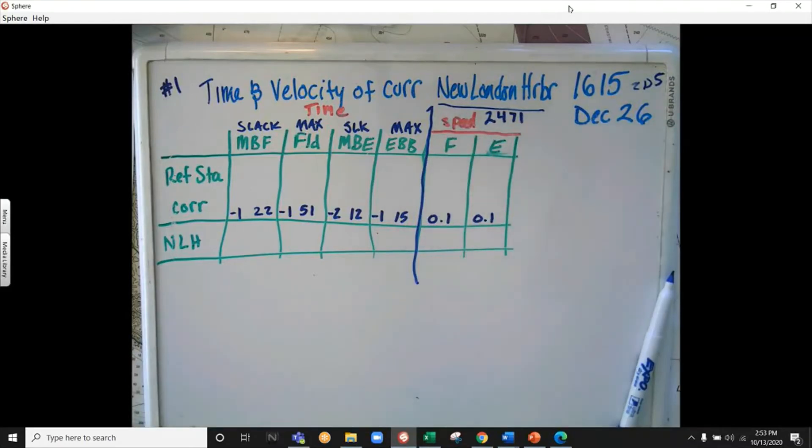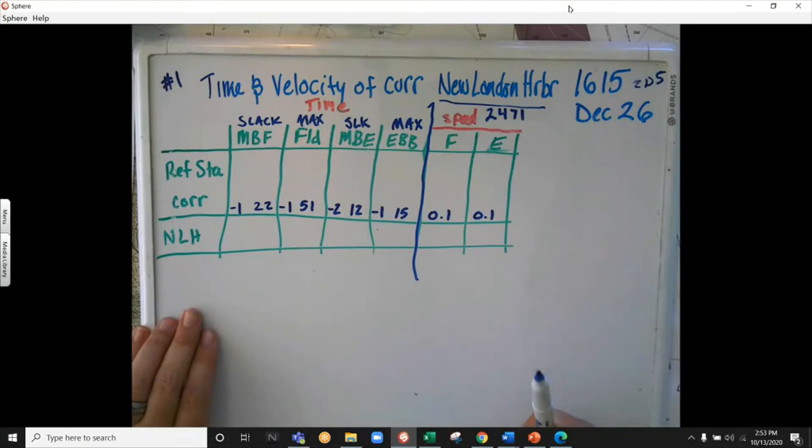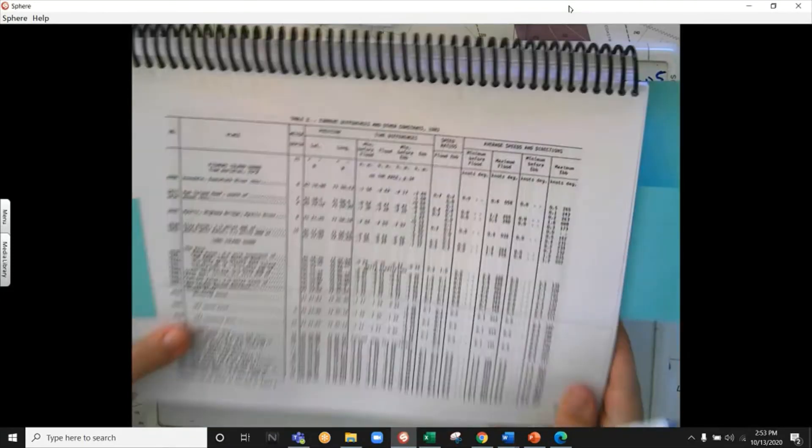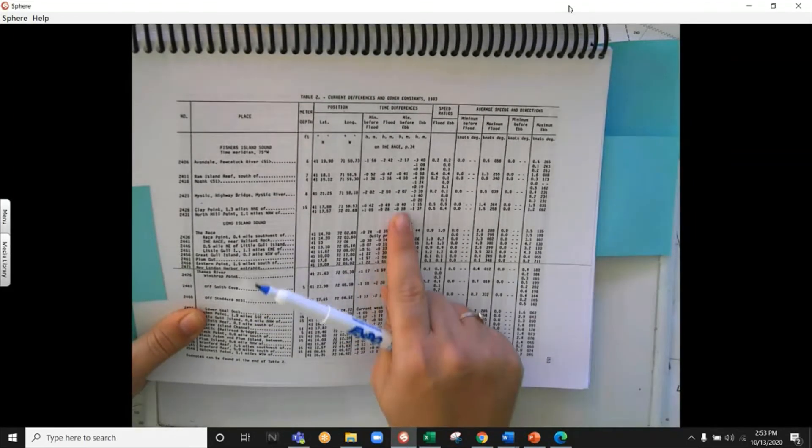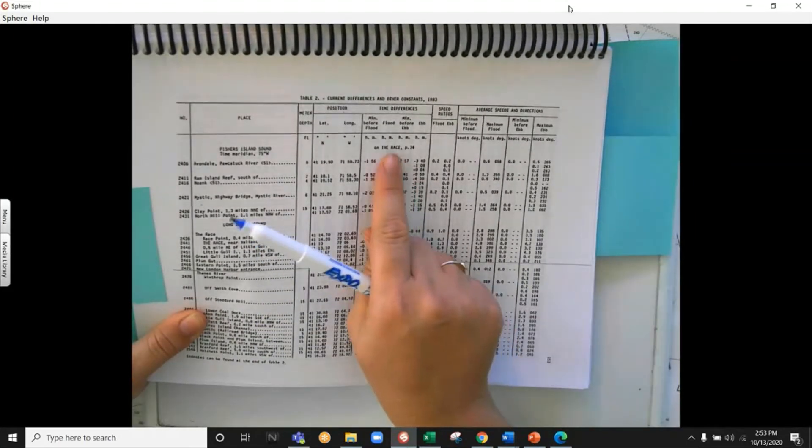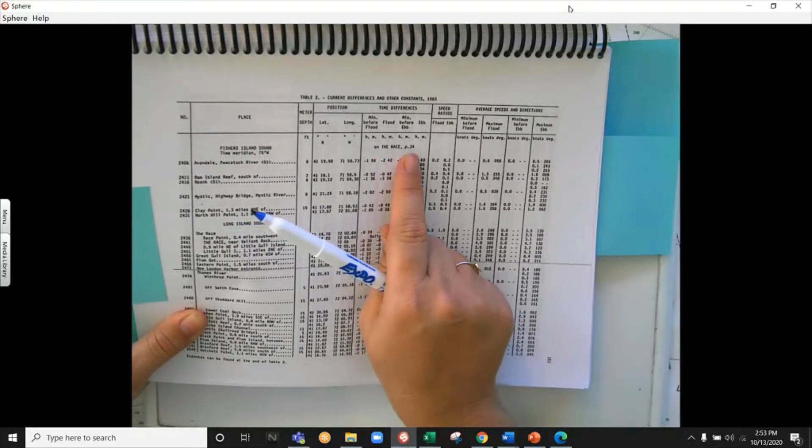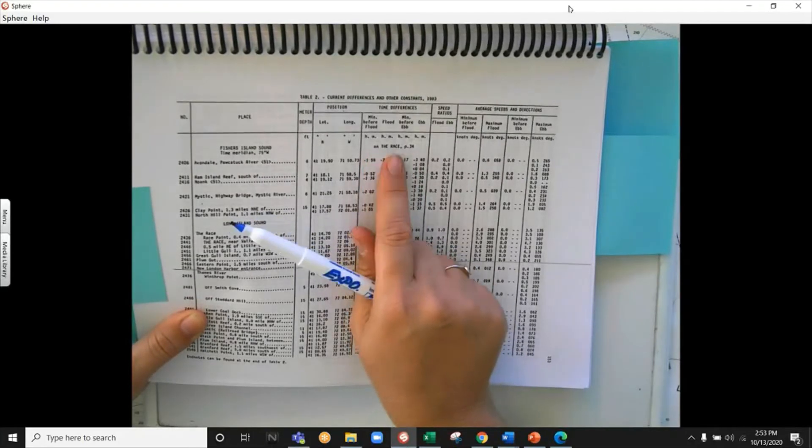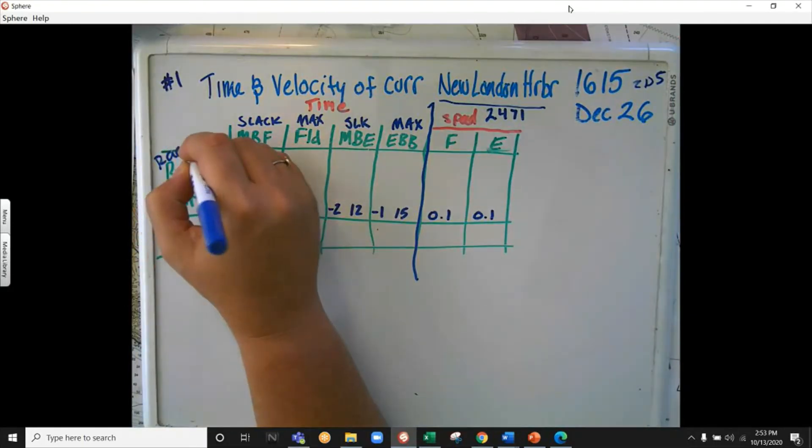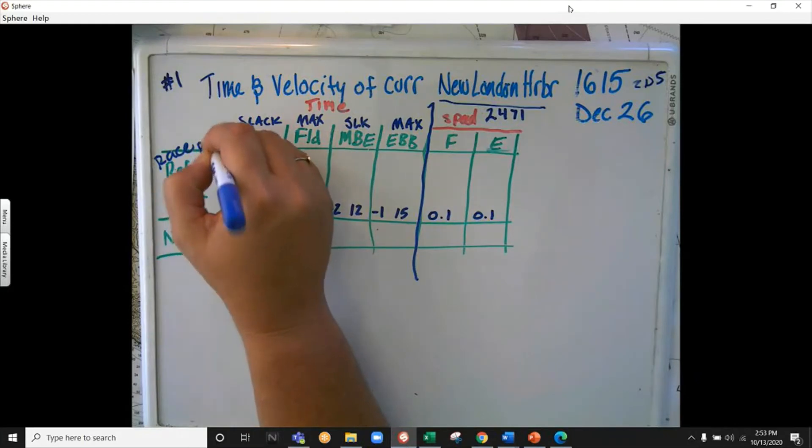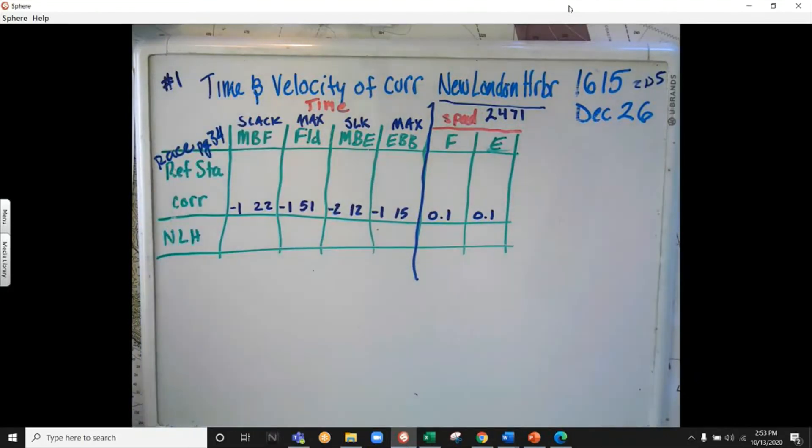We have a little more columns than we did on the tide table. Same thing on the tide table: when we look at our differences, we follow up to find our reference station that's going to be in all caps given a page number. So the race, page 34, is our reference station. I'm just going to write in the race, page 34. Let's go to page 34.